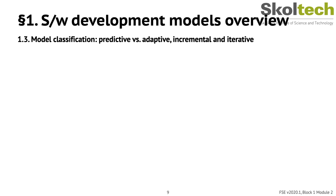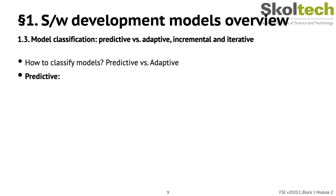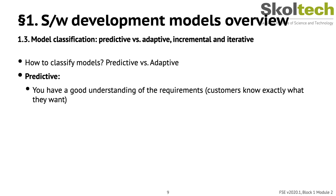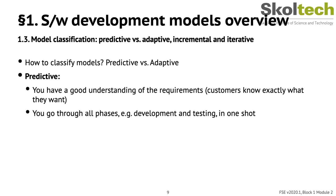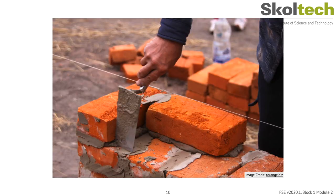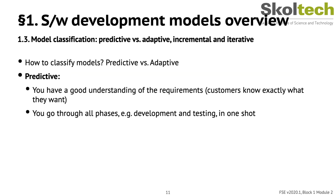One way of classifying models is viewing them as either predictive or adaptive. In a predictive development model, you predict in advance what needs to be done and then go out and do it. You need a good understanding of requirements, supposing customers know exactly what they want. You go through all phases — development, testing, and deployment — in one shot. As an analogy, you build a brick wall based on past experience: you know exactly how long it takes and how many bricks you need.